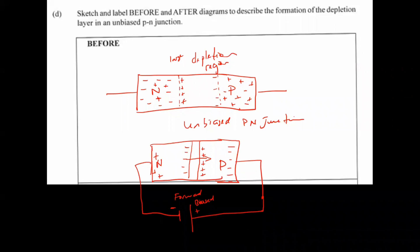In forward bias, you should draw arrows showing that positive ions are repelled by the positive terminal across the depletion region. Charges moving across the depletion region reduce its width to a smaller gap — a smaller depletion region — and this is due to the system being in forward bias. That completes this part of the question, and in fact completes Question 2.